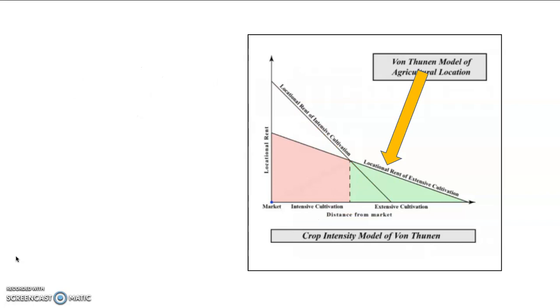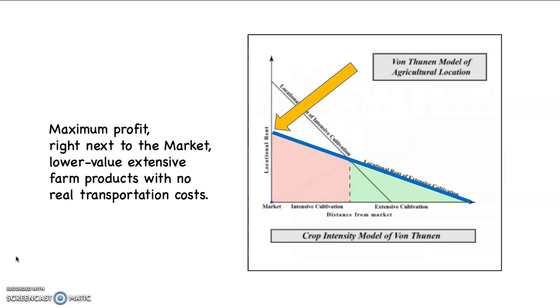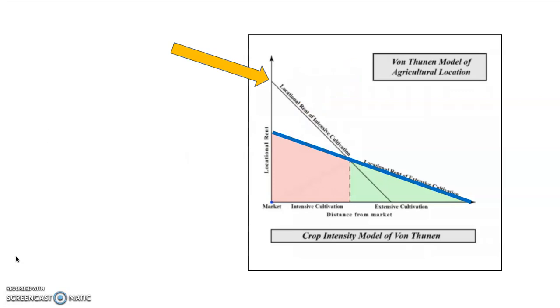Now notice that the bronze arrow is pointing at the other arrow, the one that has a slighter slope to it. Now I just highlighted it in blue. This is the locational rent of extensive agricultural products. And notice that once again, right next to the market, extensive products are going to have their greatest ability to maximize profit. But intensive products are going to have a higher value. And so they are naturally going to dominate. Nobody's going to grow extensive agricultural products right next to the market when they can grow intensive agricultural products and make a bigger profit. Remember, the farmers are always operating logically.